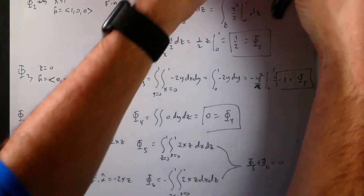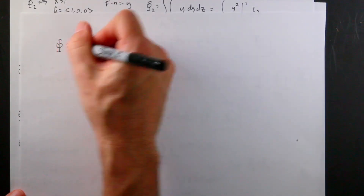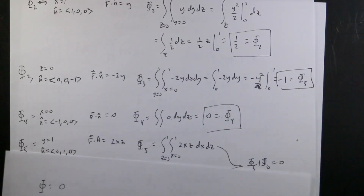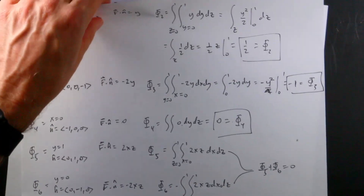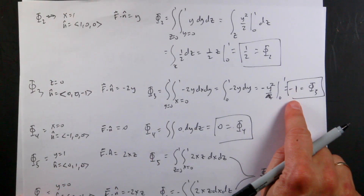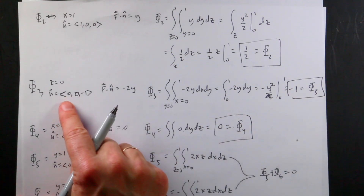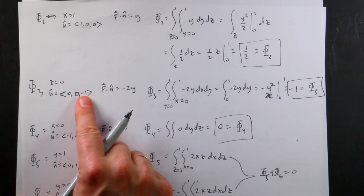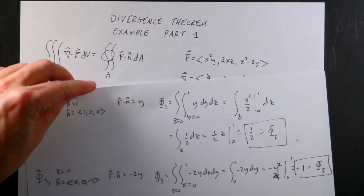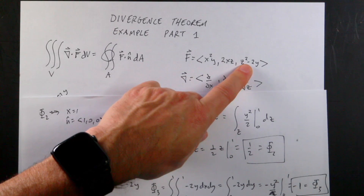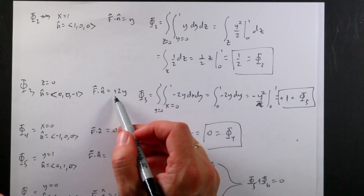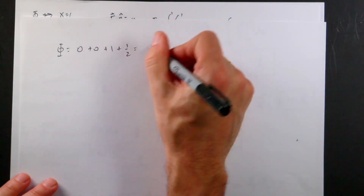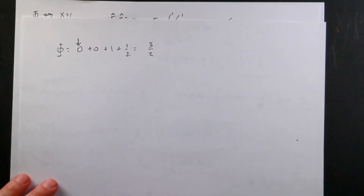Now we can write down the total flux. Phi five plus phi six is zero, phi one is zero, phi four is zero. Adding them all up: zero plus zero plus one half (phi two) plus one (phi three, which has a sign correction giving positive one) plus zero equals three halves. So the total surface flux equals three halves.